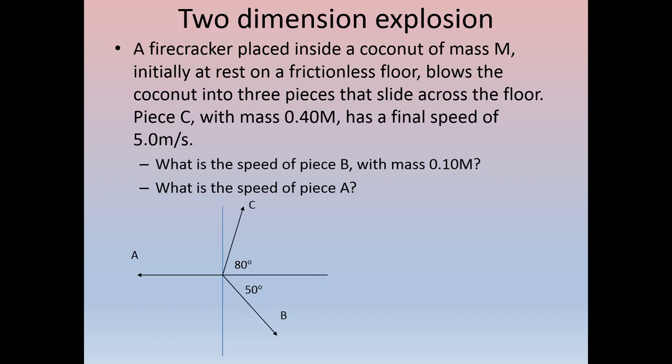What is the speed of piece B if it has a mass of 0.10M? And then what is the speed of piece A? Here below we have a diagram of the three pieces moving in their directions. Just to clarify, this diagram is a sky view, so you are looking at this from above.